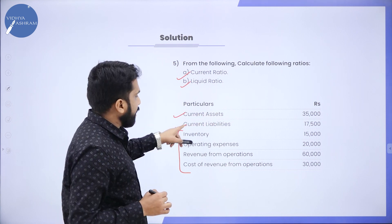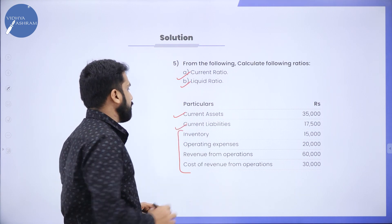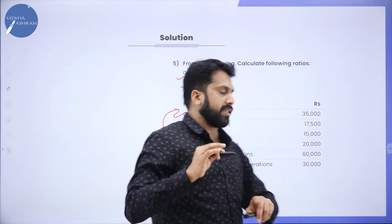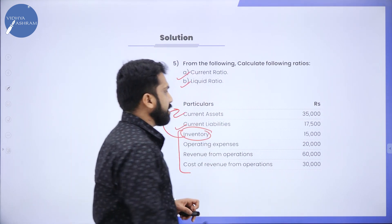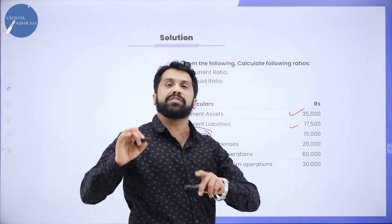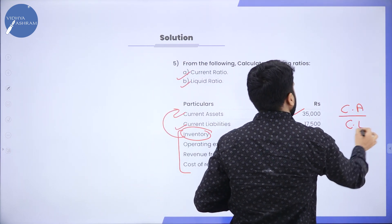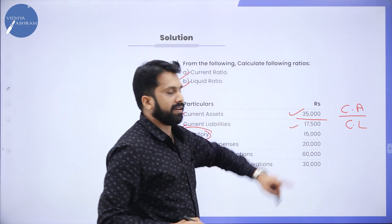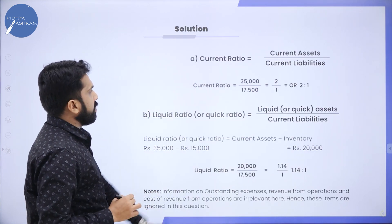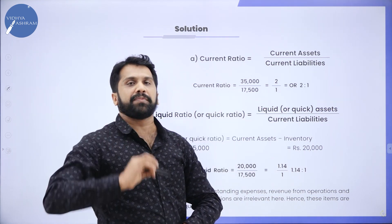Current Asset is given directly, and Current Liability is also given. Always remember — in the Current Asset figure, Inventory is already included. Current Asset is 35,000 and Current Liability is 17,500. Applying Current Asset divided by Current Liability: 35,000 divided by 17,500 gives an answer of 2 is to 1.